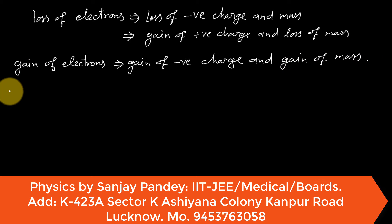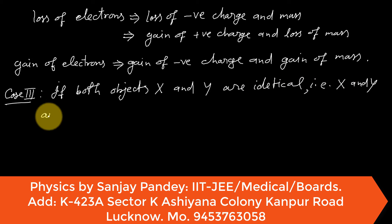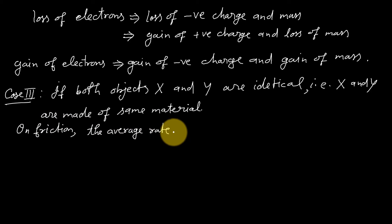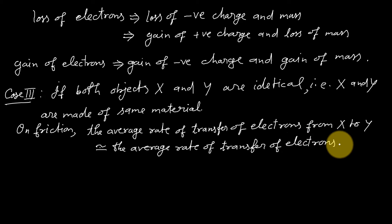Here we will also consider a special case in which both objects X and Y are identical. That is X and Y are made of same material. In this case, on friction, the average rate of transfer of electrons from X to Y will be equal to the average rate of transfer of electrons from Y to X. And in this case, there will not be any electron loss or gain by X or Y. Therefore, both objects X and Y remains neutral after friction.